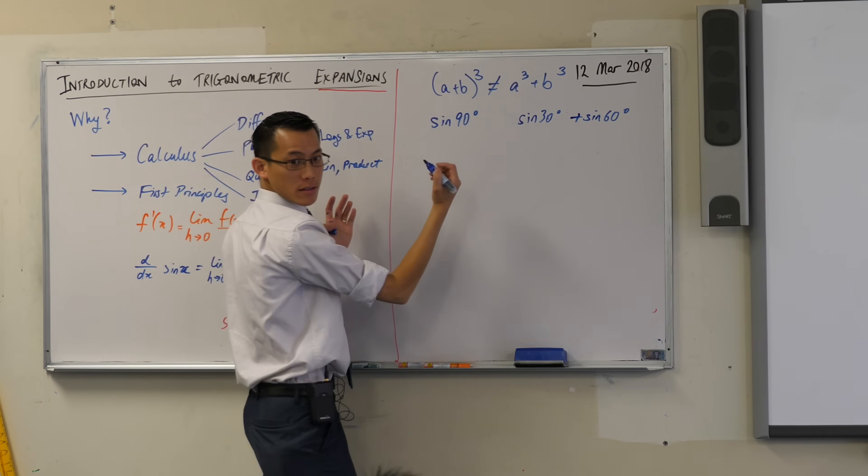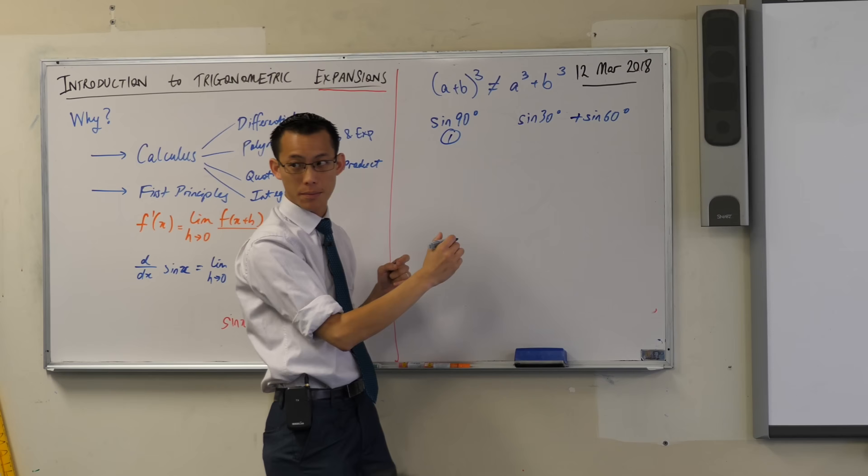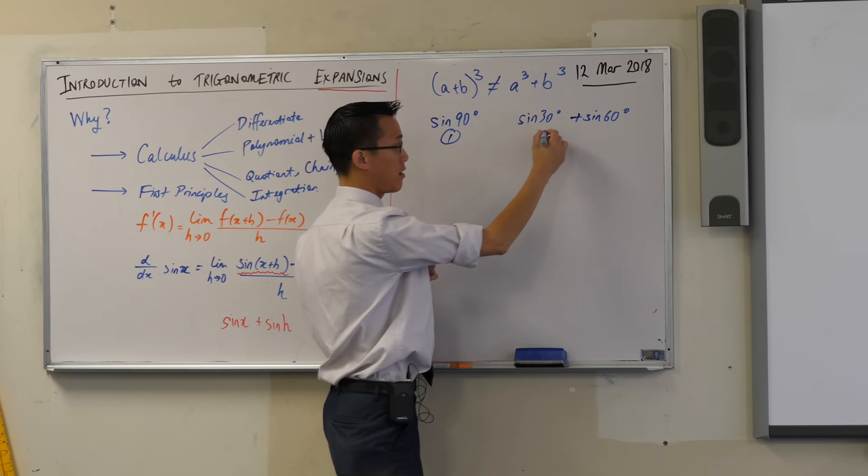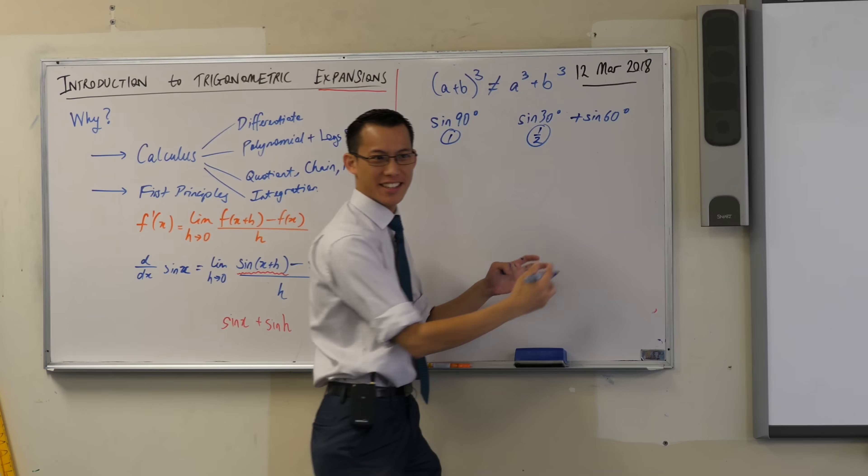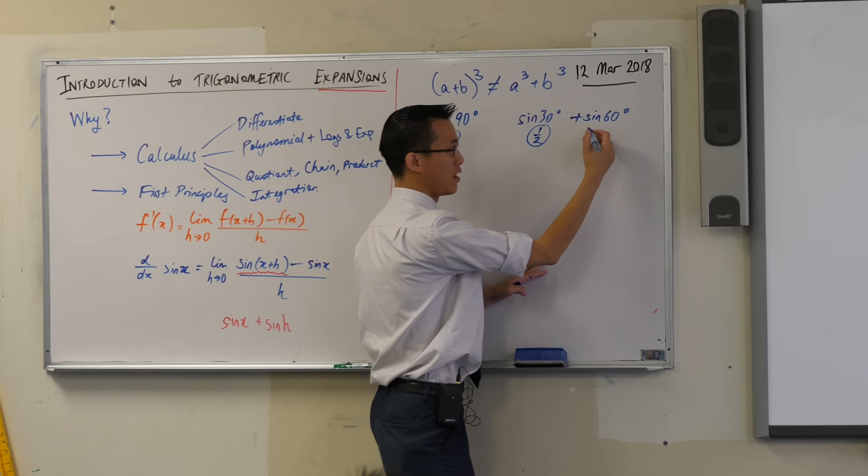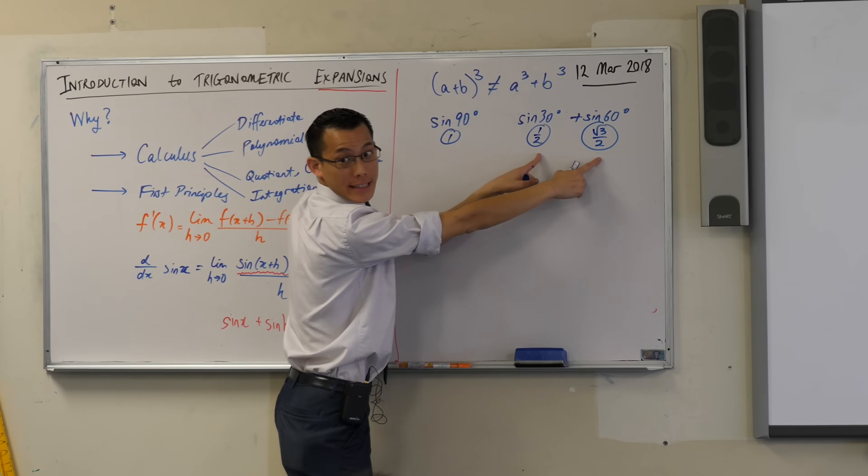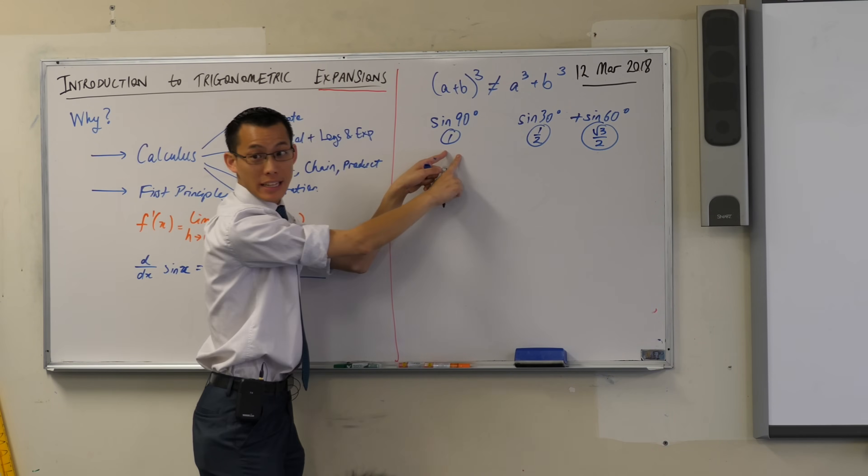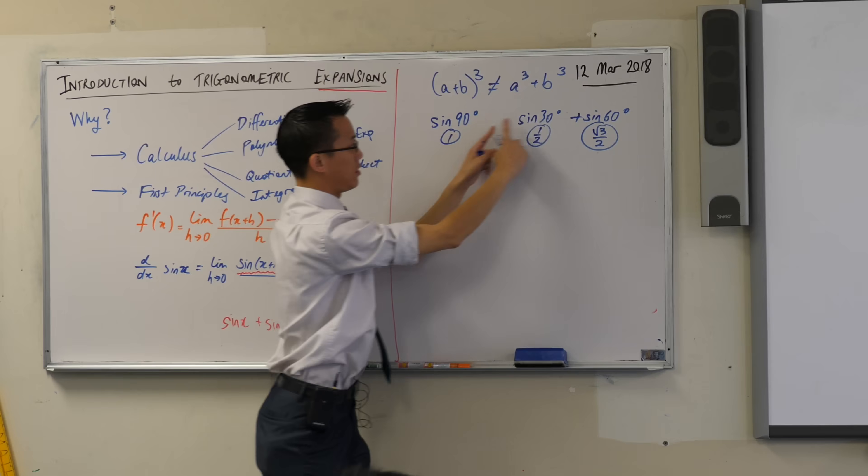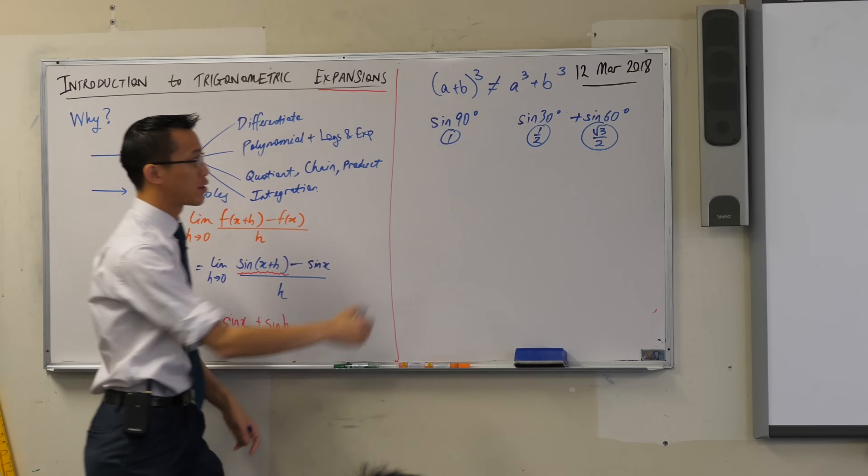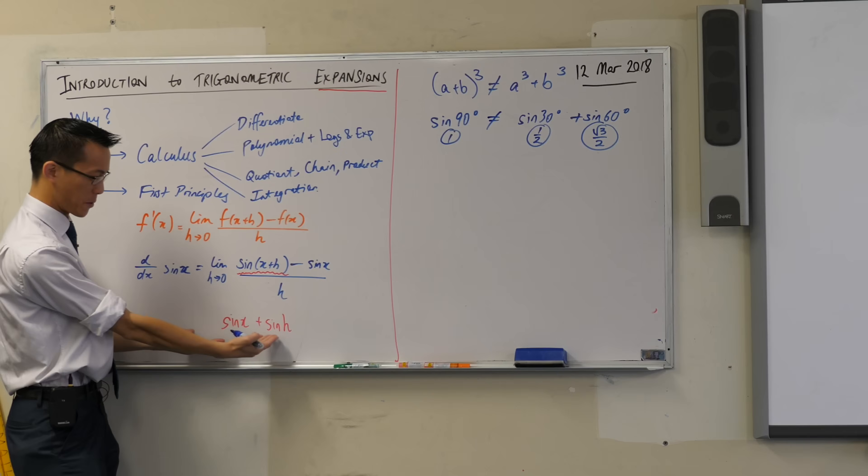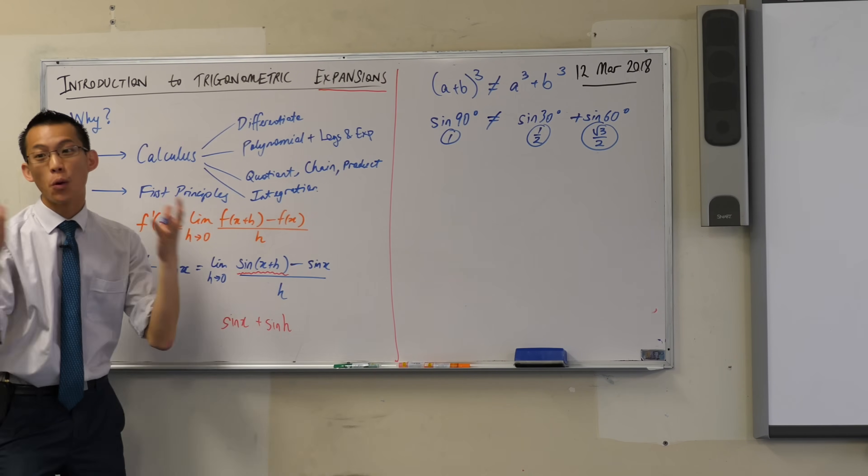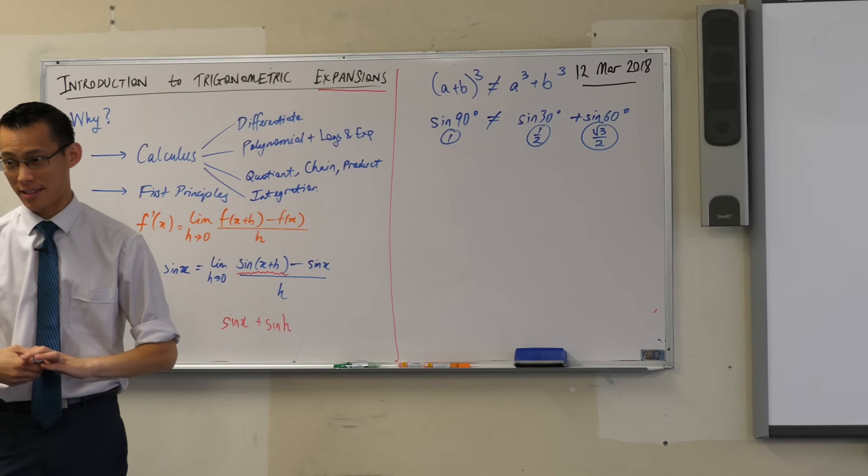But what are these things equal to? What is sine 90? It's one. What's sine 30? It's a half. But sine 60, it doesn't work, does it? Because what is sine 60? It's root 3 on 2. So, when you add these together, you clearly do not get this, even though 30 and 60 do add to 90. So, sine x plus h is not just going to equal to these things independently. So, we have to work out what to do with these things.